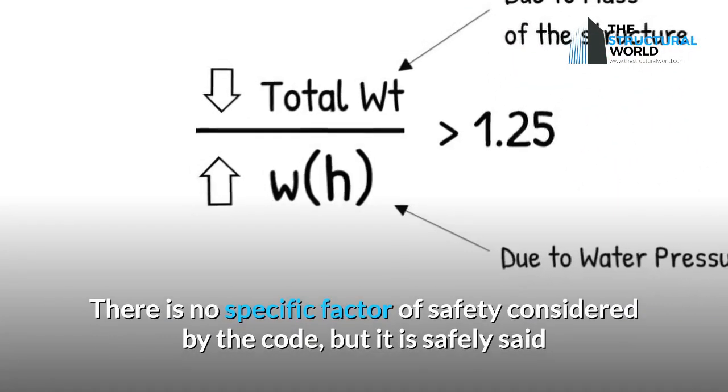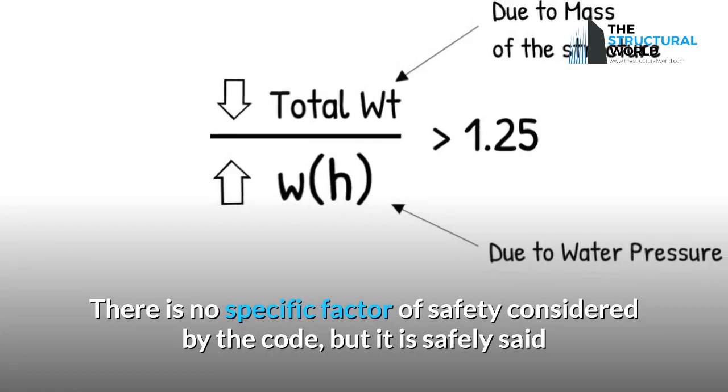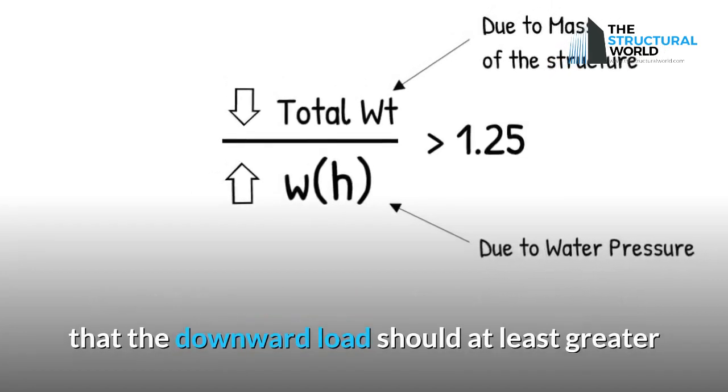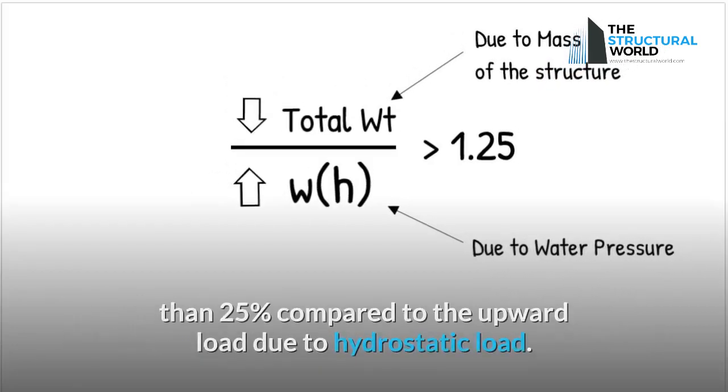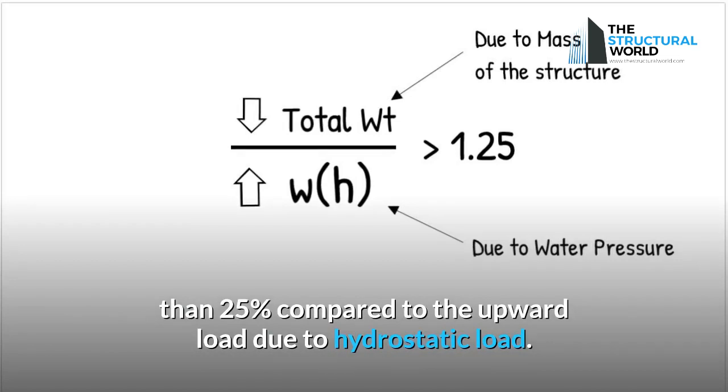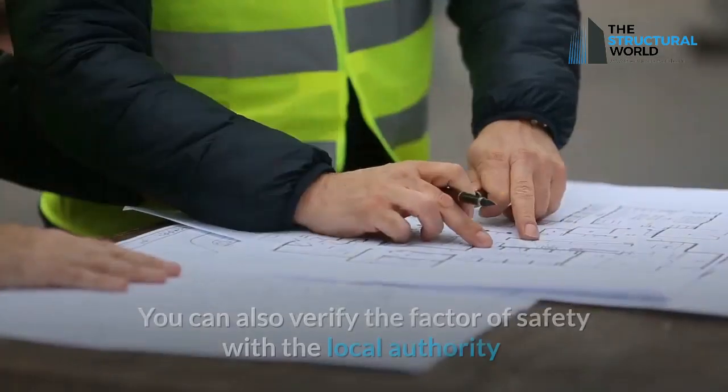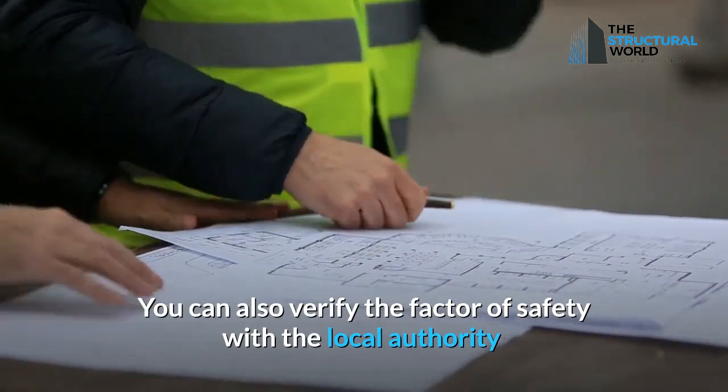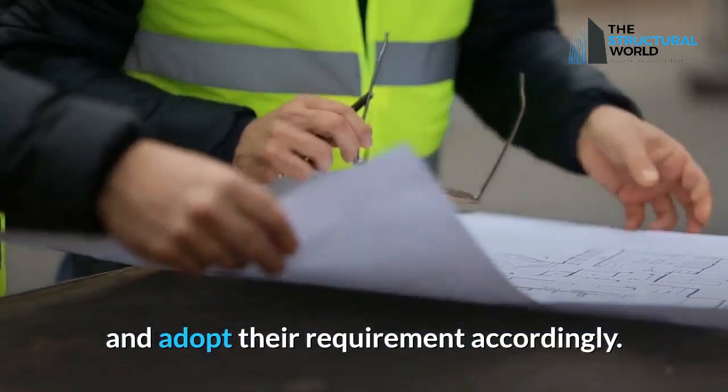There is no specific factor of safety considered by the code, but it is safely said that the downward load should be at least 25% greater than the upward load due to hydrostatic load. You can also verify the factor of safety with the local authority and adopt their requirement accordingly.